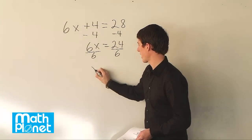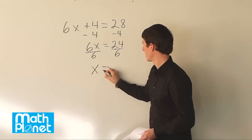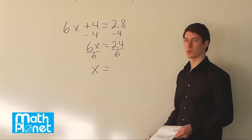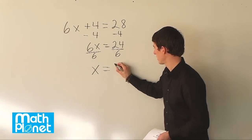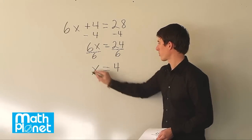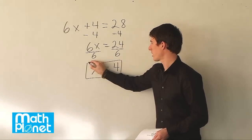So 6 over 6 just gives us x, which is what we're looking for. And then we have 24 over 6, and 24 divided by 6 is just 4. So we have our final answer here of x equals 4.